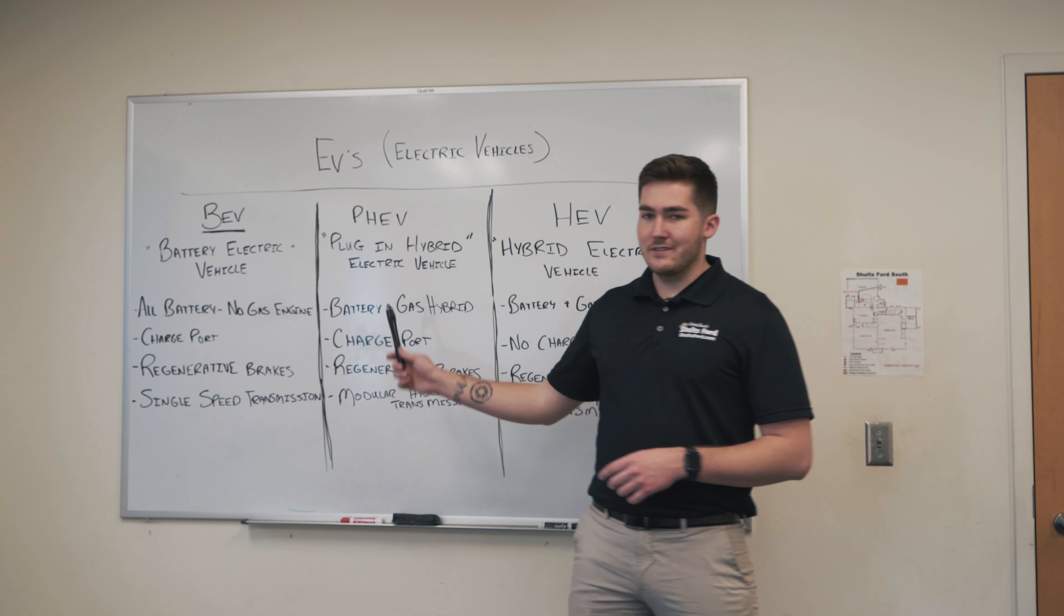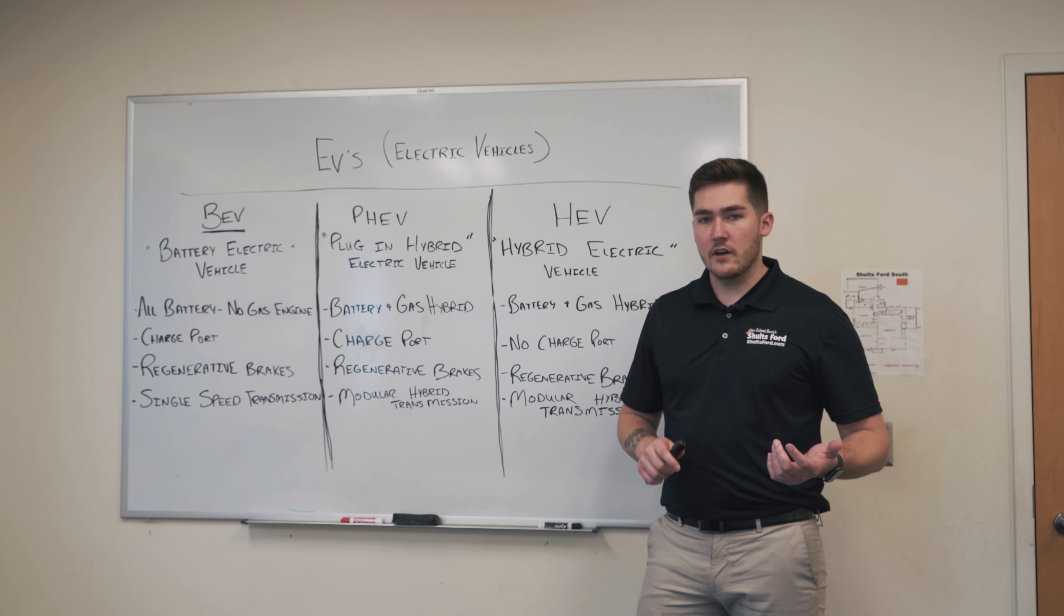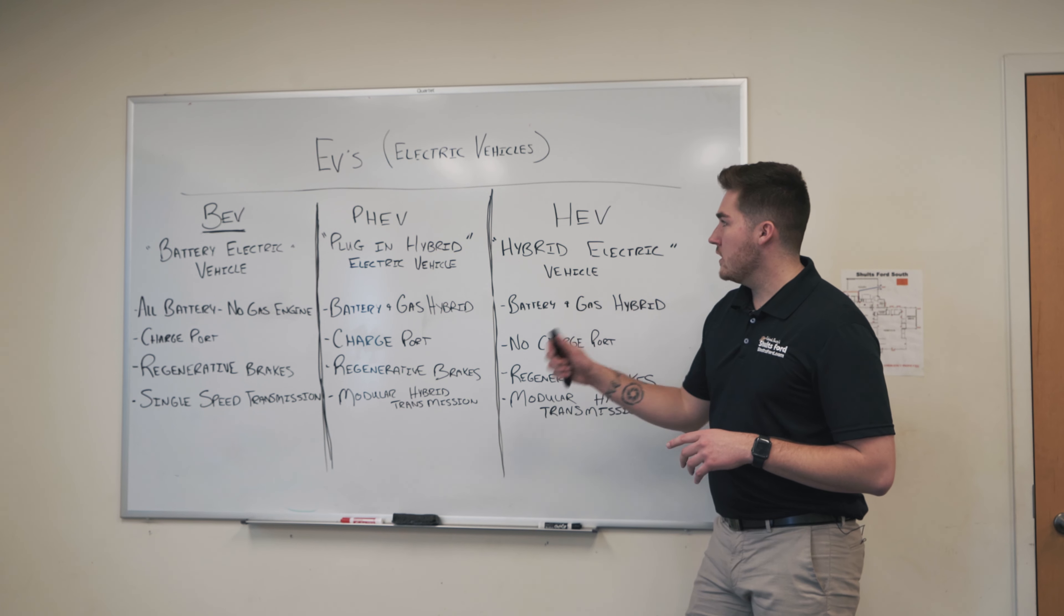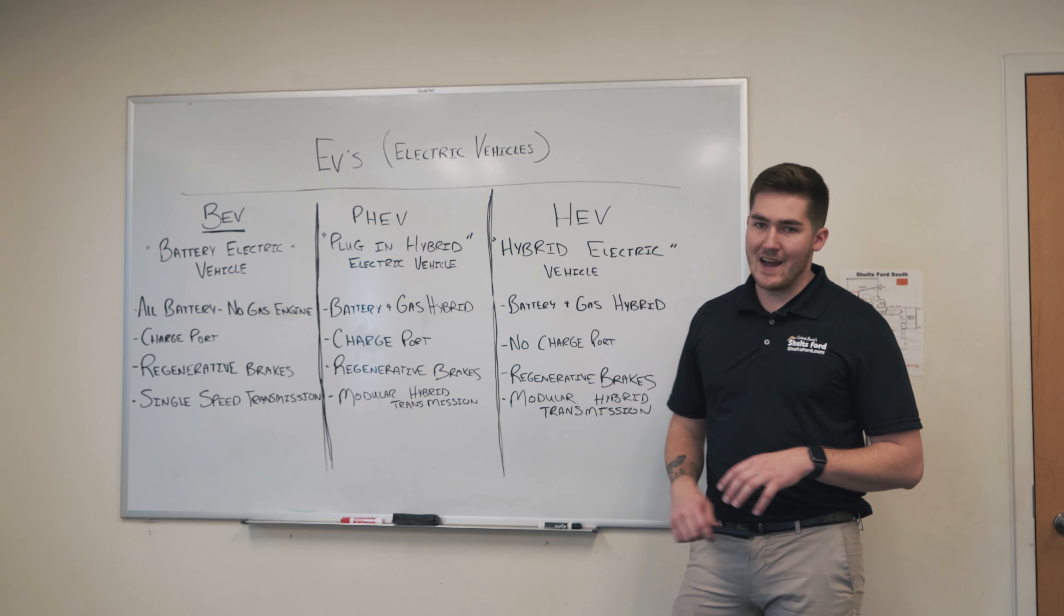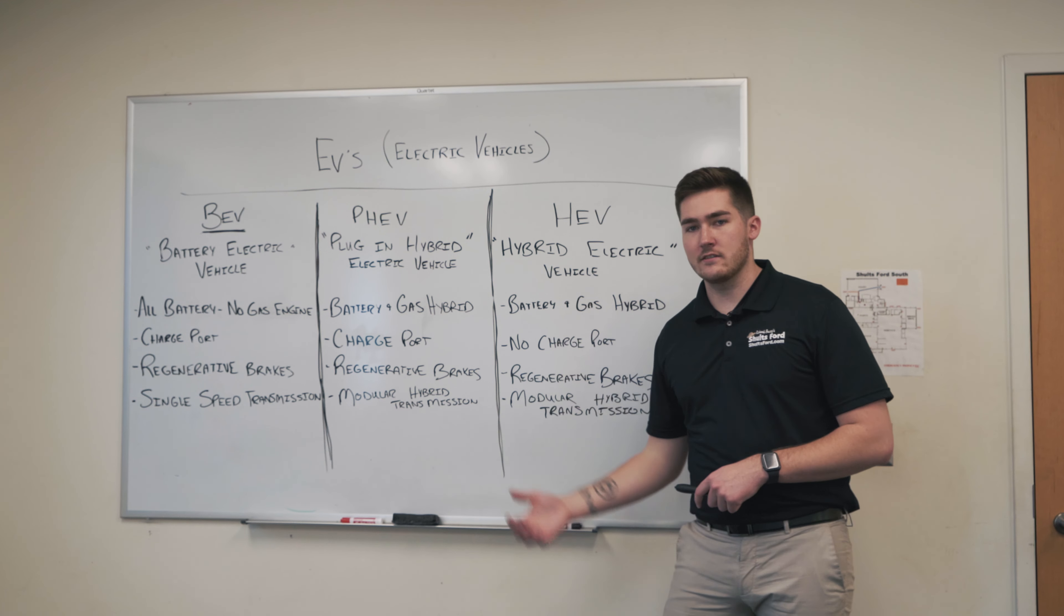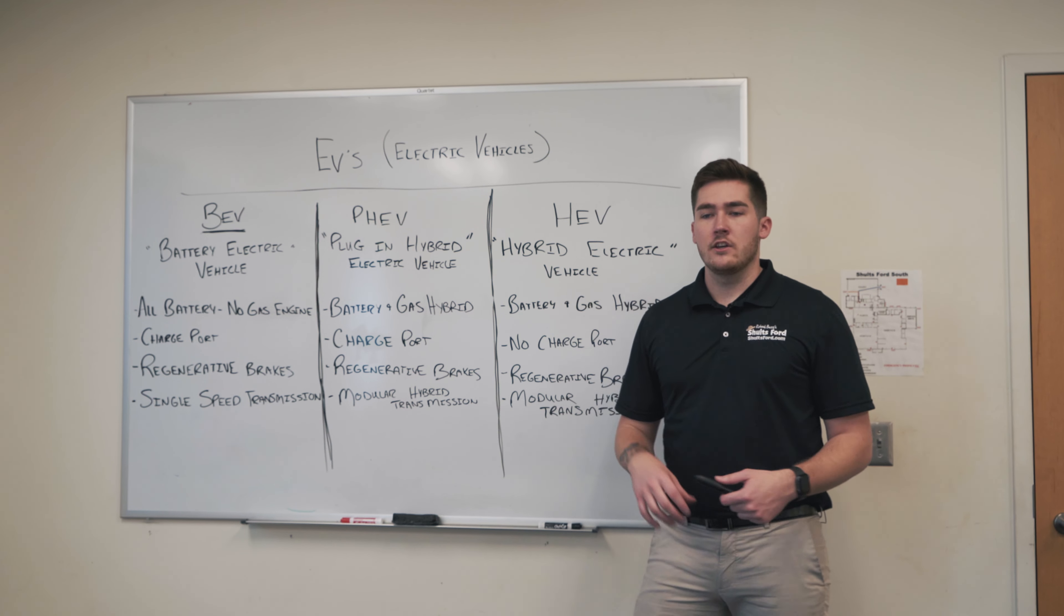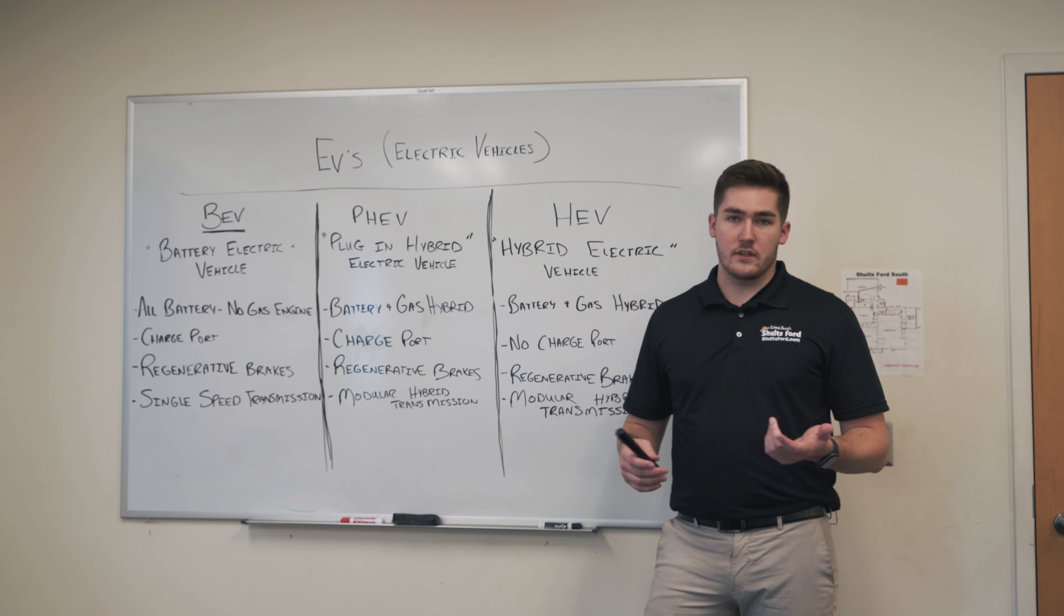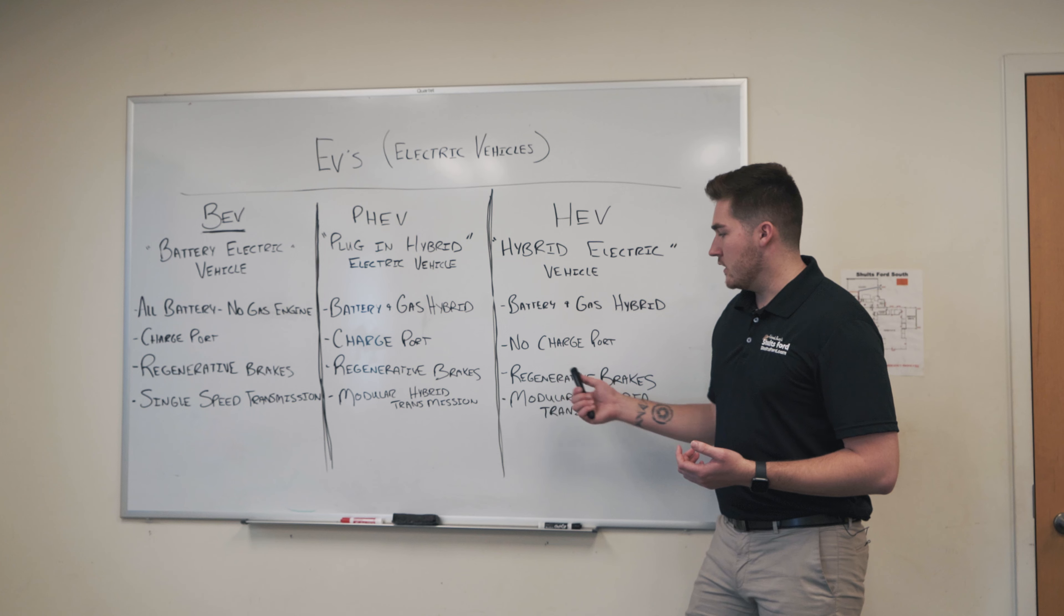So with the BEV, it's also a single-speed transmission. So one gear, it's continual power. With a PHEV and an HEV, you'll get a modular hybrid transmission. So since you have a gas engine and an electric motor, you need a transmission that can alternate those or work together. So that's what each one of them will have.